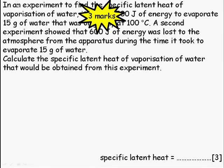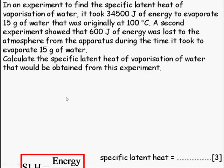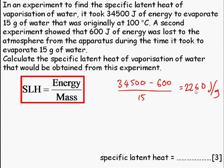Let's have a look at an exam question. Pause the video and read this question. If you've read this question, it's very similar to what we just looked at. We use the specific latent heat capacity equation, because that's what we're being asked for. It tells us the energy it took to evaporate 15 grams of water, so we're looking at vaporization. It also tells us that the experiment showed 600 joules was lost to the environment, so this is going to have to be subtracted, as this is what's making the experiment less accurate. So we've got energy divided by mass gives us 2260 joules per gram as our final answer.